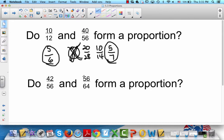What about 42 over 56 and 56 over 64? 42 and 56 are both divisible by 14, so 14 goes into 42 three times and 14 goes into 56 four times. 56 and 64 - what goes into them? Yes, 8. 8 goes into 56 seven times and 8 goes into 64 eight times. So do those form a proportion? No, they don't.